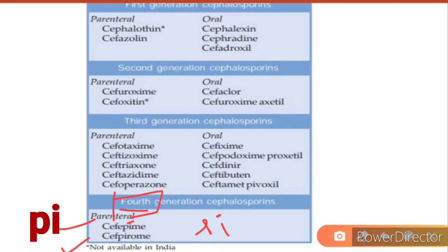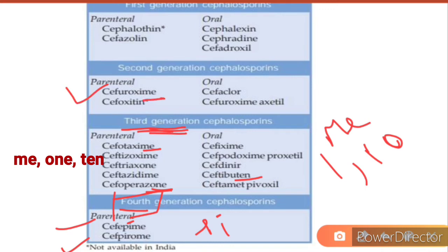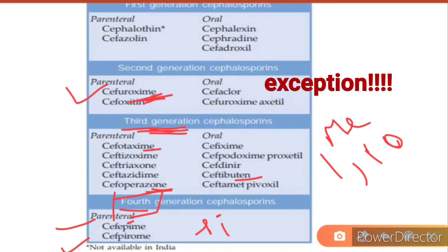How will you identify the third generation cephalosporins? Here you have to look for 'ME', where ONE (1) and TEN (10) are the codes — so ME1 and ME10 are the mnemonics for third generation. One exception is cefuroxime — it also has 'ME' in its name, but it is not third generation; it is second generation. So this you have to remember.